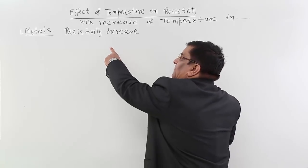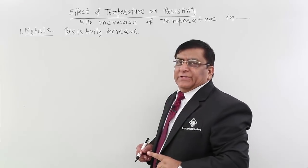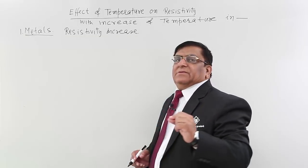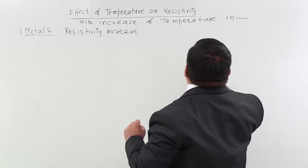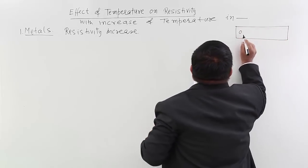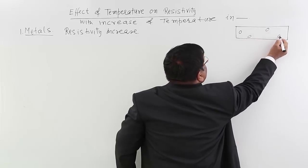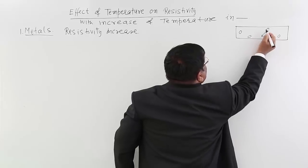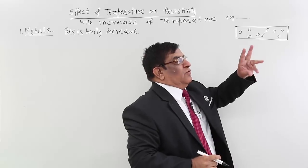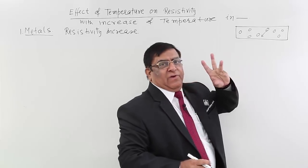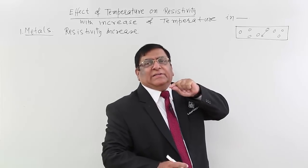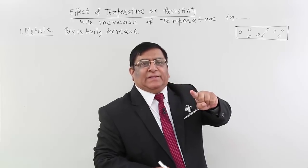Now, what is the reason for this? The reason is when we increase the temperature, then the atoms inside — the positive charged ions inside — with increase of temperature, their motion goes on increasing, their speed increases. So earlier they were moving with a certain velocity, now when we increase the temperature, they will move with higher velocity. How does this affect the current?